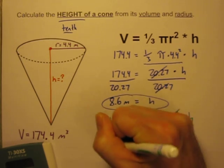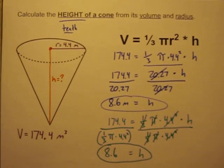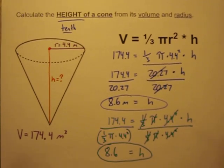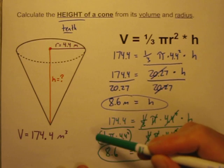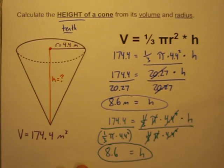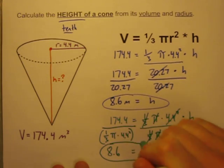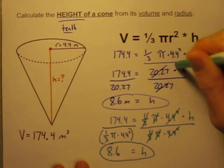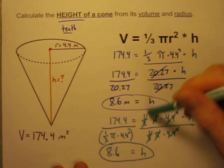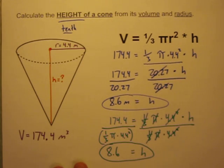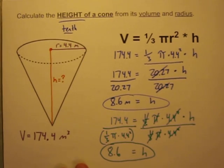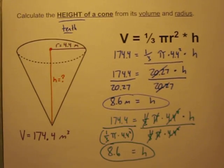I like this second way because it eliminates the extra rounding in the middle of the problem. However, when I've taught it to students, this step of dividing by the whole expression confuses them — they aren't quite sure what they're doing. Either way, if you're careful, both methods will get you the right answer. I hope this helps when you are solving these problems about cones.